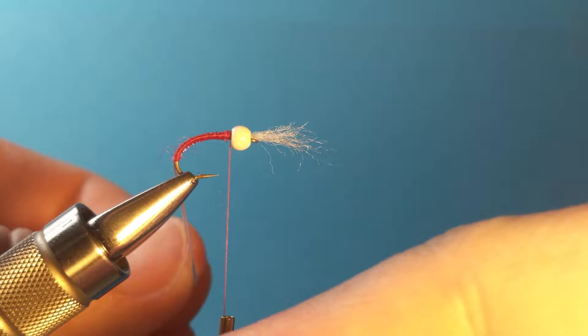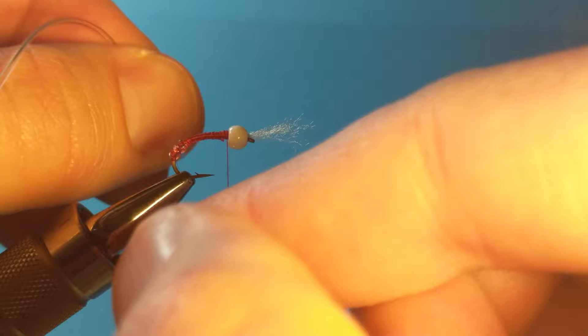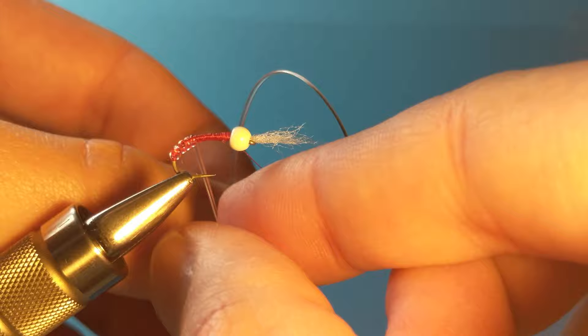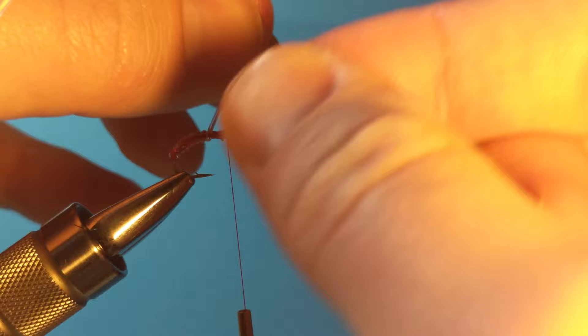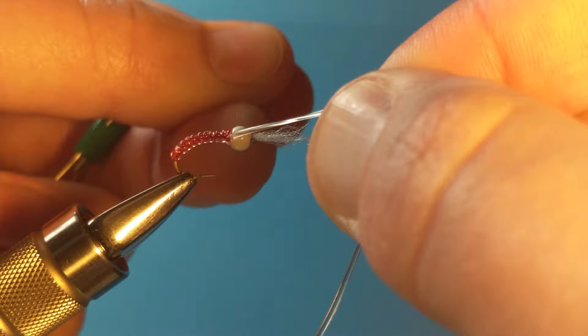All right. Now we're going to take our V-rib, our vinyl rib. As we're holding it tight, we're just going to wrap it from the bottom all the way to the top. Keep touching turns all the way until you get to that bead. I like to kind of get one half up into that bead to lock it in. Now tie it in here.